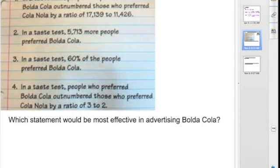So number one tells us the ratio of Bolda Cola to Cola-Nola is equal to 17,139 to 11,426. So if you could find a common factor between those two numbers, you would definitely want to simplify because they're very complicated, they're very large numbers, and they're hard to think about in a consumer type scale.